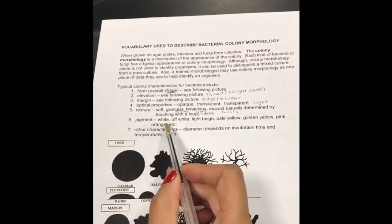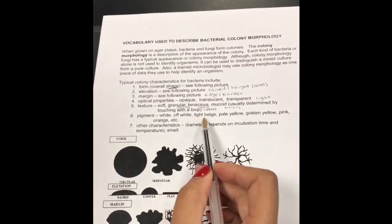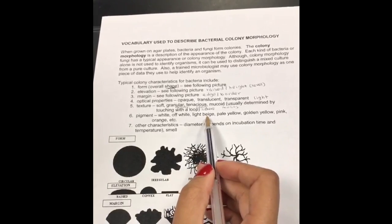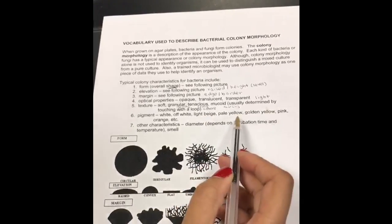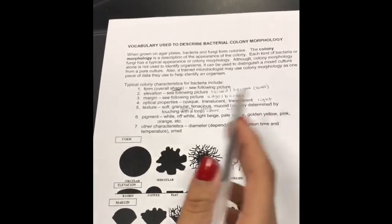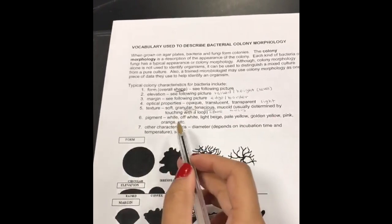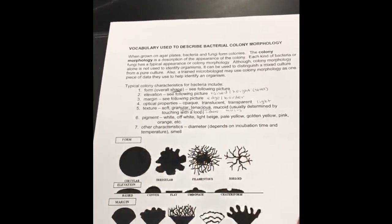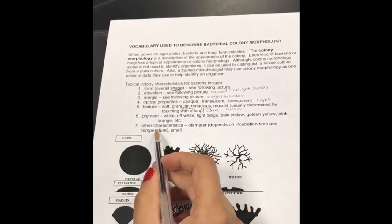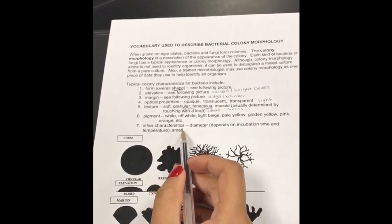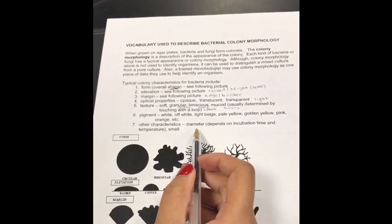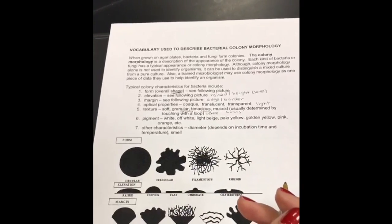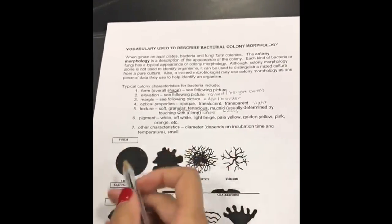For pigments, you can have white, off-white, light beige, pale yellow, golden yellow, pink, or orange — several different colors. Just describe what color it is. Other characteristics include the diameter or radius; basically note the size of the colony. These are all the different things you can use to describe a colony.